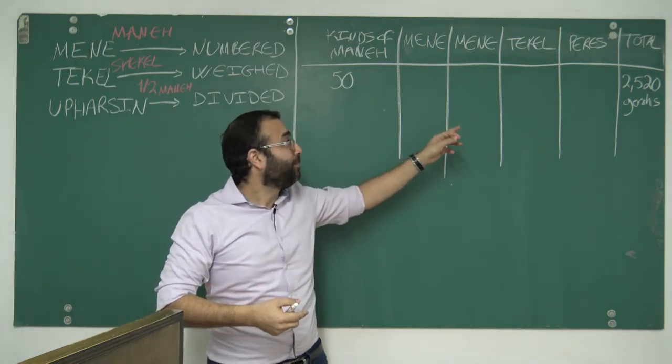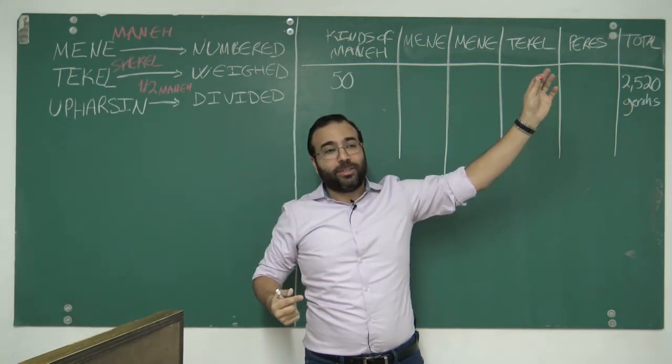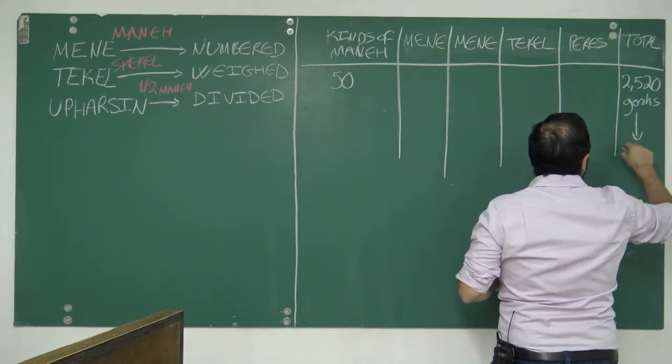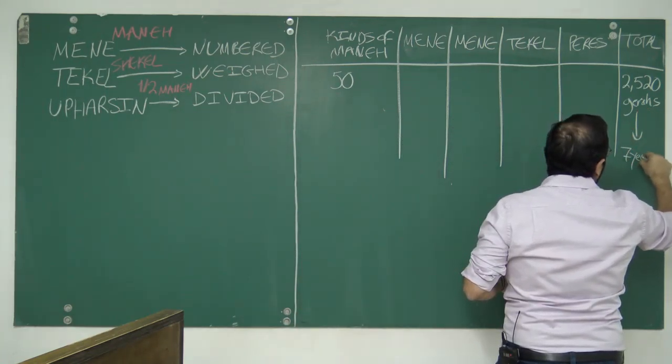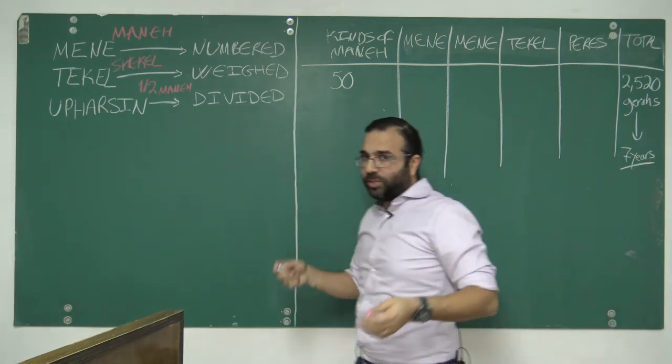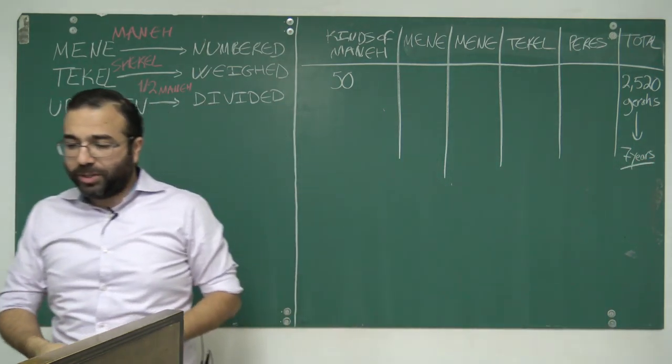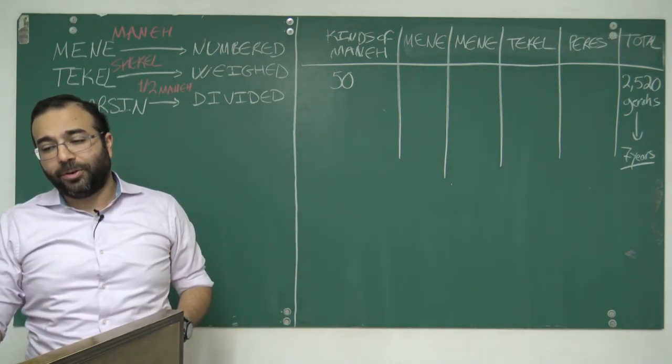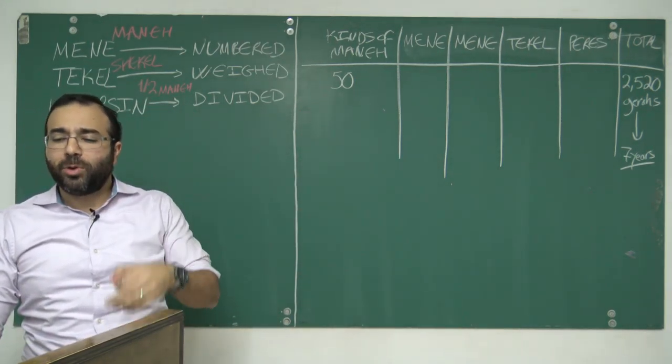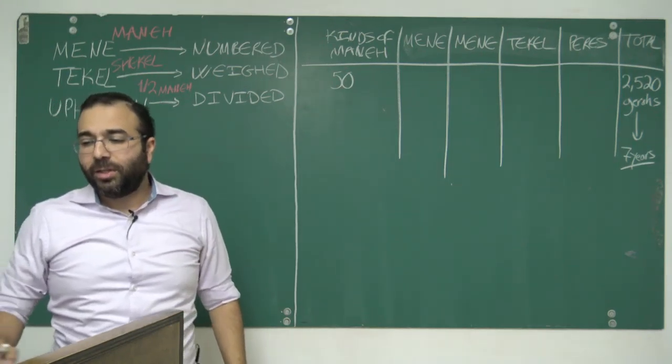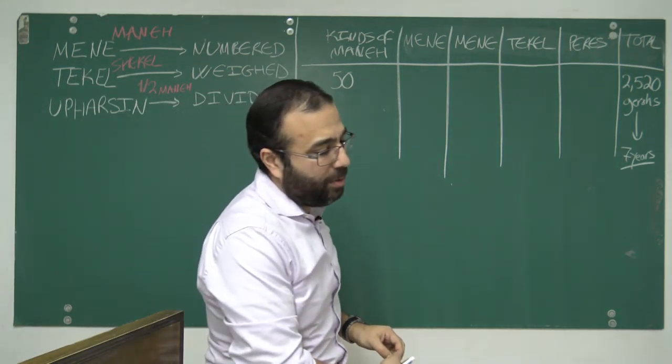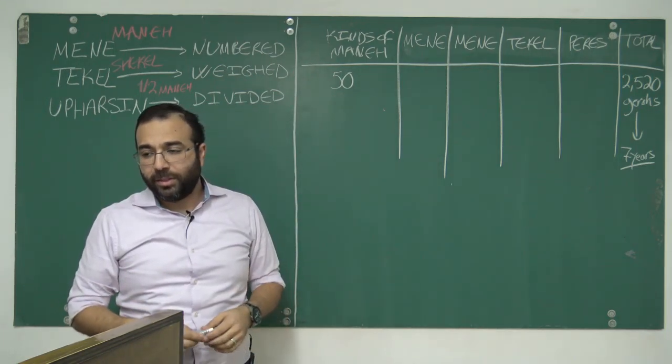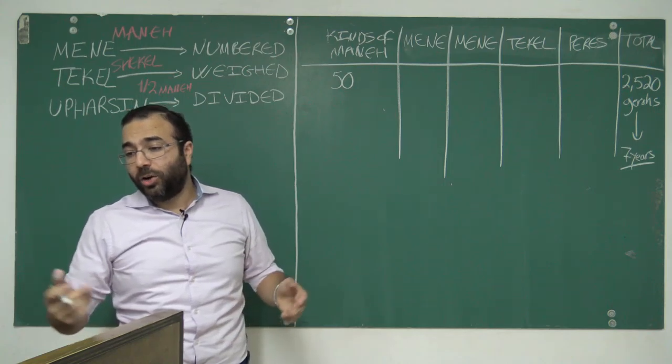If you have one money at 50 shekels and a shekel is 20 gerahs, when you multiply them together, the total you get to is 2520 gerahs. Does that number tell you anything? How long is the tribulation? Seven years.